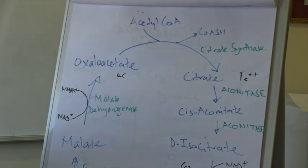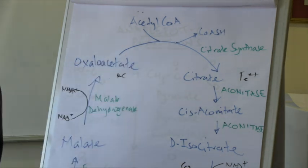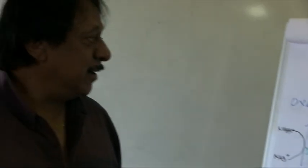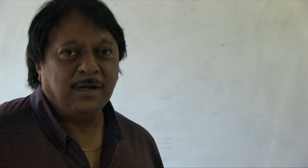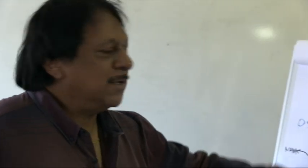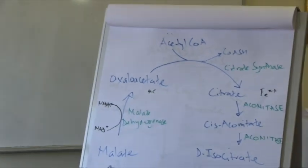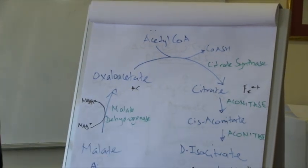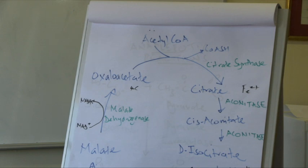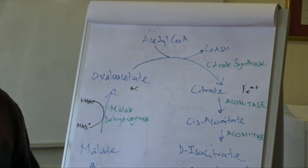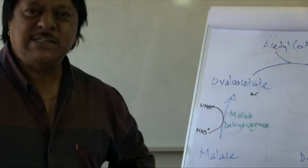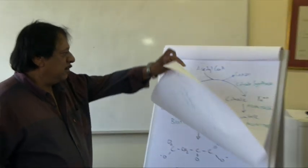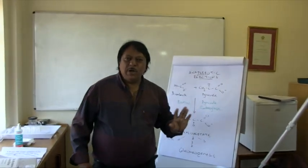The intermediates of the TCA cycle are very attractive to other pathways — pathways which will utilize these intermediates to synthesize very useful compounds that the cell requires. If these intermediates are constantly being removed by biosynthetic pathways, there is a danger that the TCA cycle will run out of intermediates. If the TCA cycle ceases to function, the cell will run out of ATP and die. The cell has a backup system that replenishes these intermediates via side reactions known as anaplerotic reactions — the word anaplerotic comes from the Greek meaning 'to fill up.'